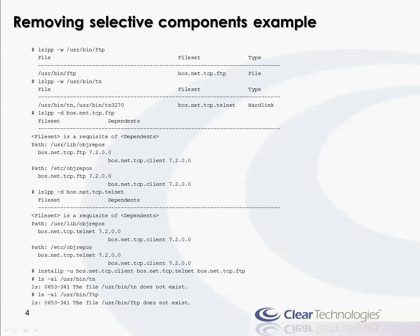Here we go. First, I'm looking for which file set is responsible for the FTP command. I run lslpp -w and see that it's bossnet-tcp.ftp, which makes perfect sense. I do the same thing for the Telnet command and find bossnet-tcp.telnet. Then I check the dependency of each file set. For FTP I have the TCP client, and the same for Telnet — TCP client is the dependency. So I run an uninstall, essentially a deinstall, of all three of those file sets.